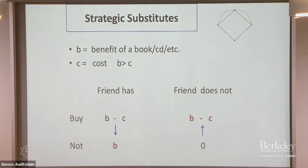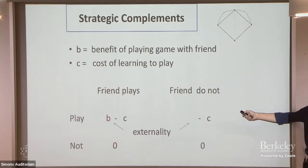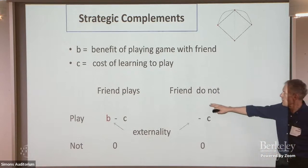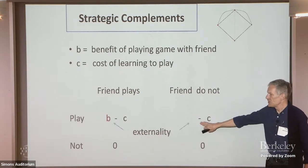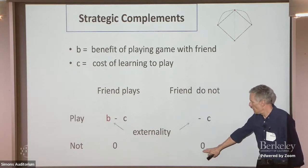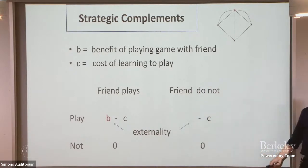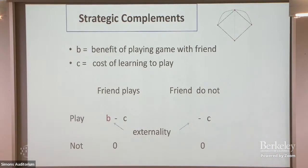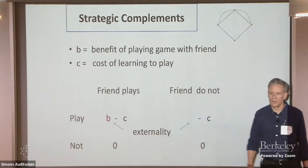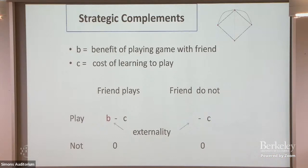Strategic complements: I get a benefit from learning to play a game or adopting a technology if my friend does as well. If the friend doesn't invest, I invest and just pay cost C with nobody to play with. If they do invest and I invest, I get the benefit minus cost. The externality is on my decision to play or adopt — the difference between these two games is where that externality shows up.